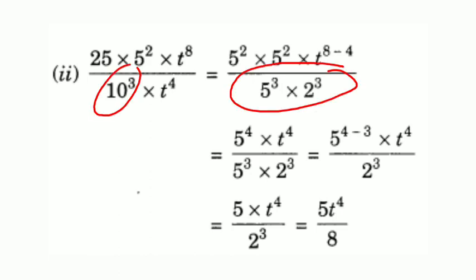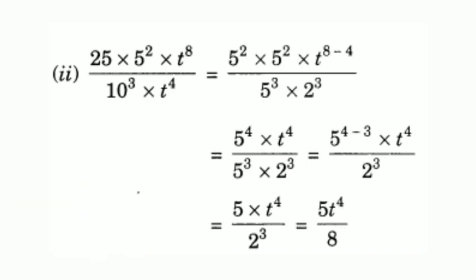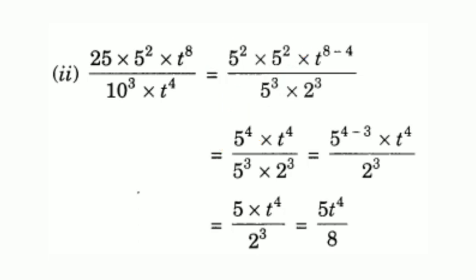The denominator has 10 raised to 3. 10 raised to 3 can be written as 2 into 5, all raised to 3, since 2 into 5 means 10. Applying the laws of exponents, this gives 2 raised to 3 into 5 raised to 3. On the numerator, applying the law: 5 raised to 2 into 5 raised to 2 equals 5 raised to 2 plus 2. Since the bases are equal, this gives 5 raised to 4.